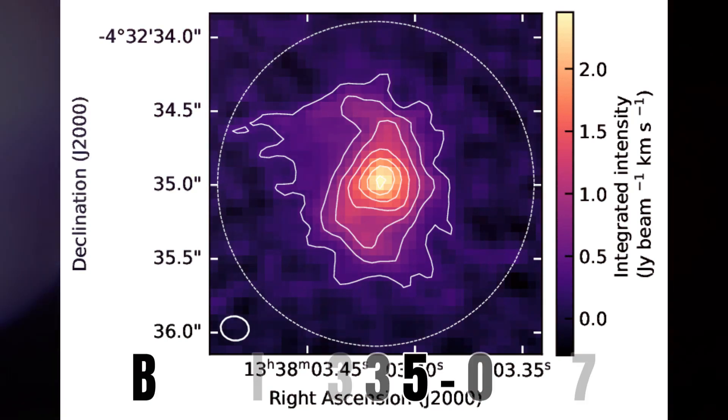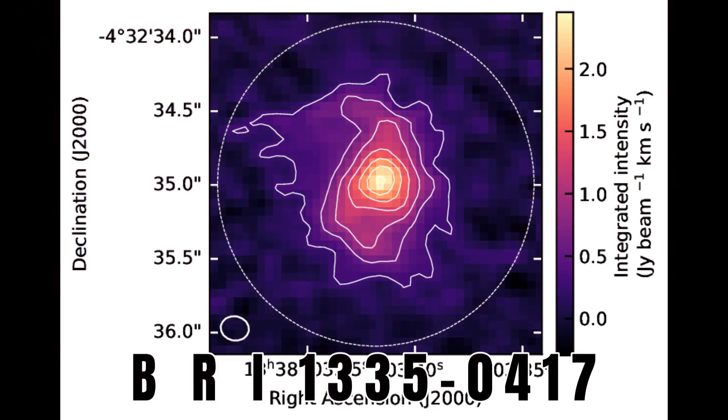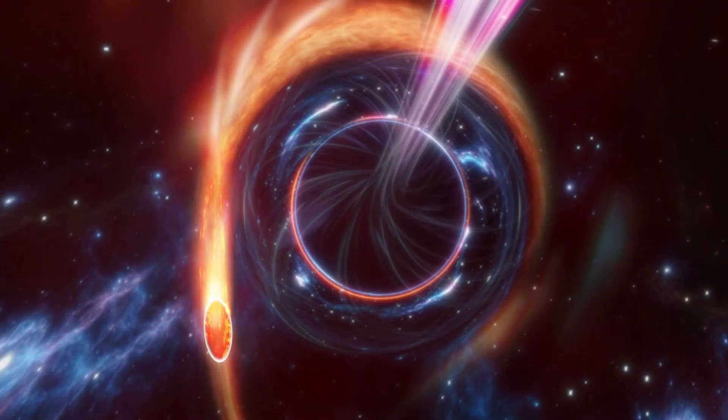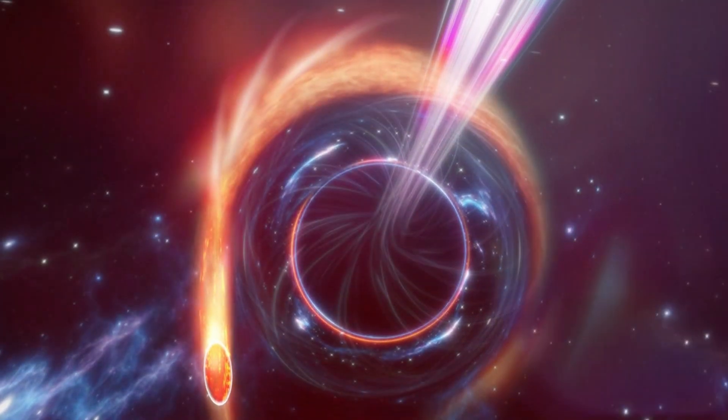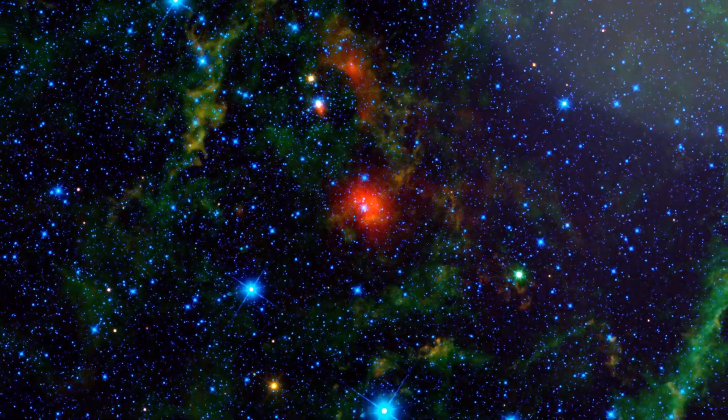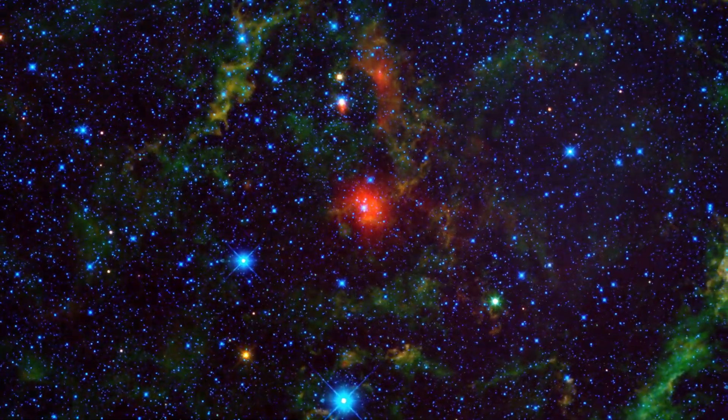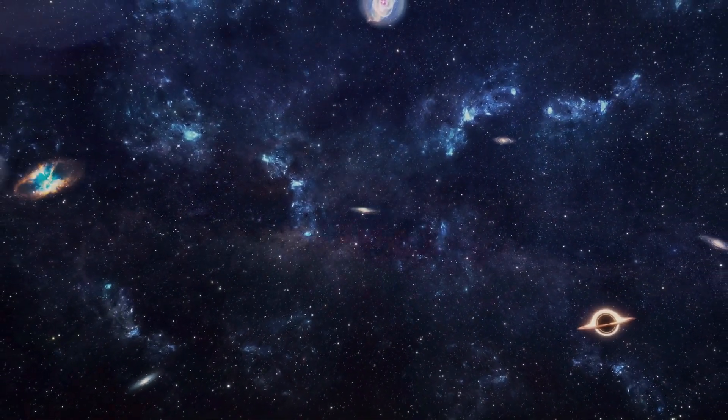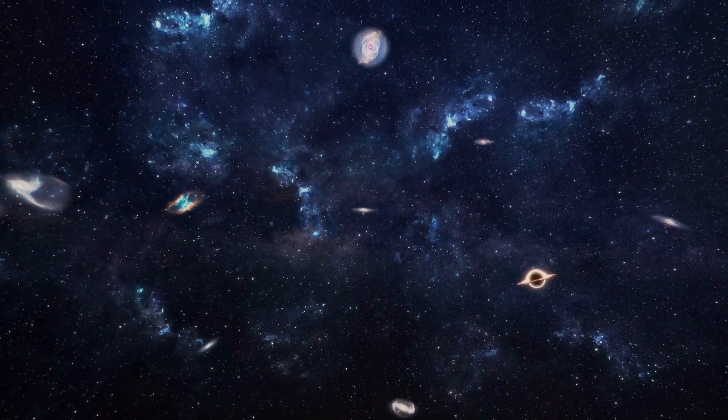Once again, the spiral galaxy BRI 1335-0417, which is 12.4 billion years old, and roughly a billion years earlier than the time thought possible for the formation of this type of complex galaxy, according to the Big Bang theory, was not discovered until 2021.